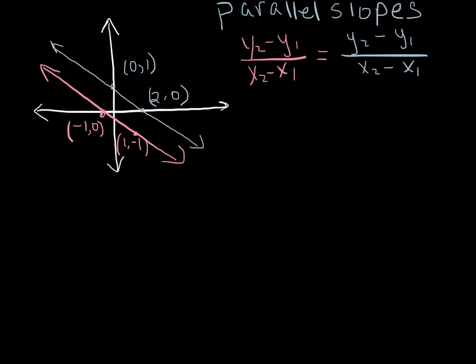So we could either look at it and figure it out or we can verify it mathematically by finding the slopes. So let's first find the slope of the pink line and let's note that it is going to be negative 1 minus 0 over 1 minus negative 1. Now that gives us a slope of negative 1 over 2.